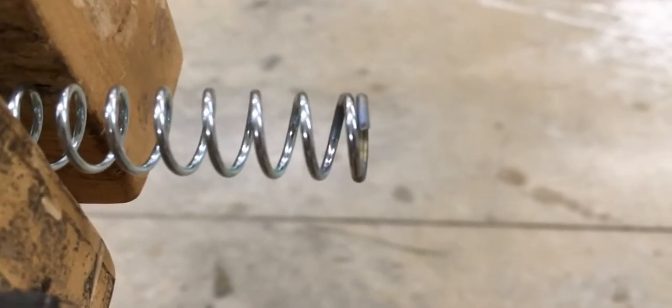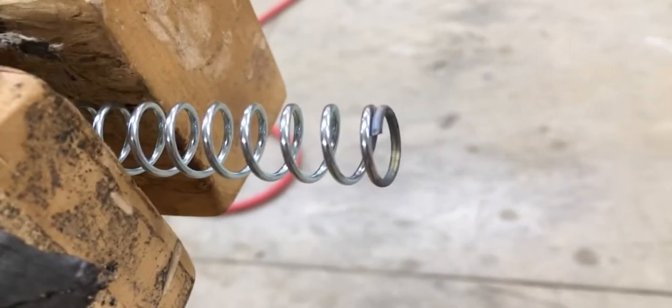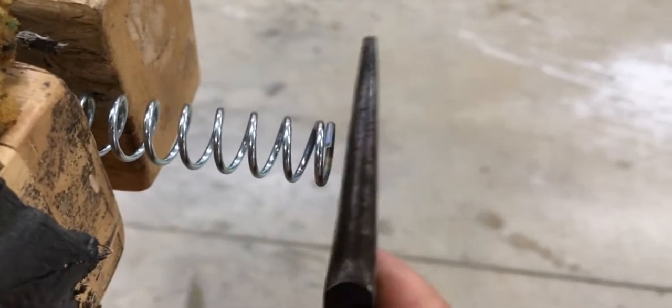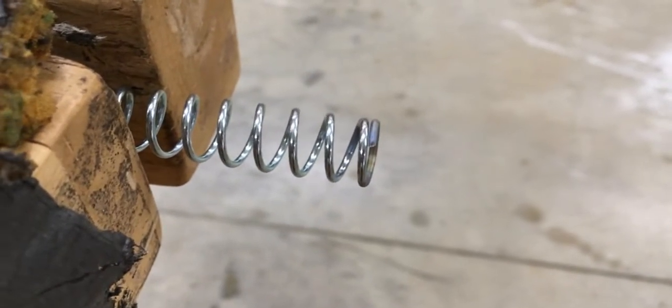And you can kind of eyeball it. It looks really flush there. So what I'm going to do now is take it over to the grinder and just take a smidge off of that end right there to make it match the other side.